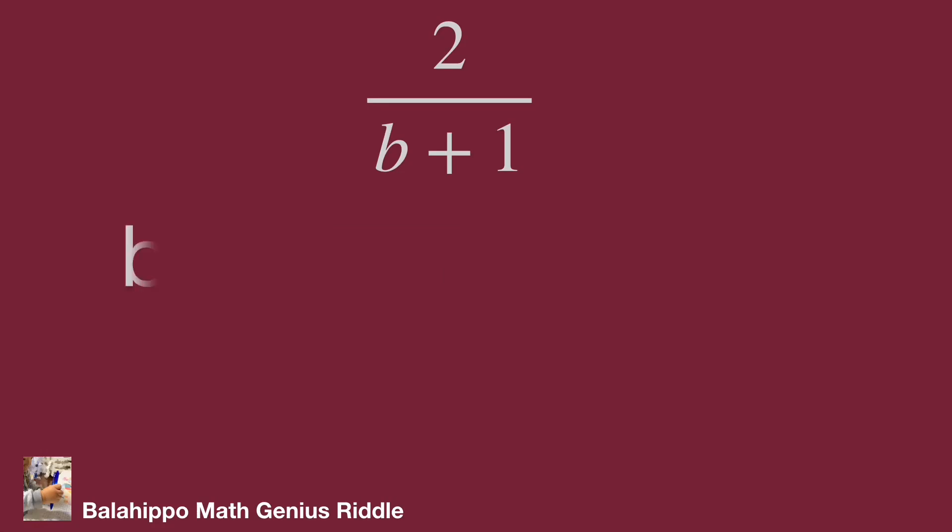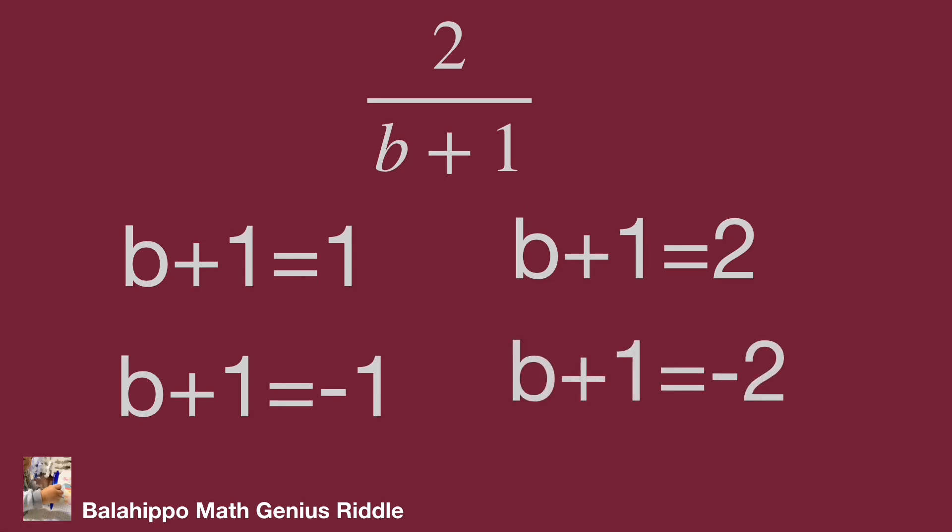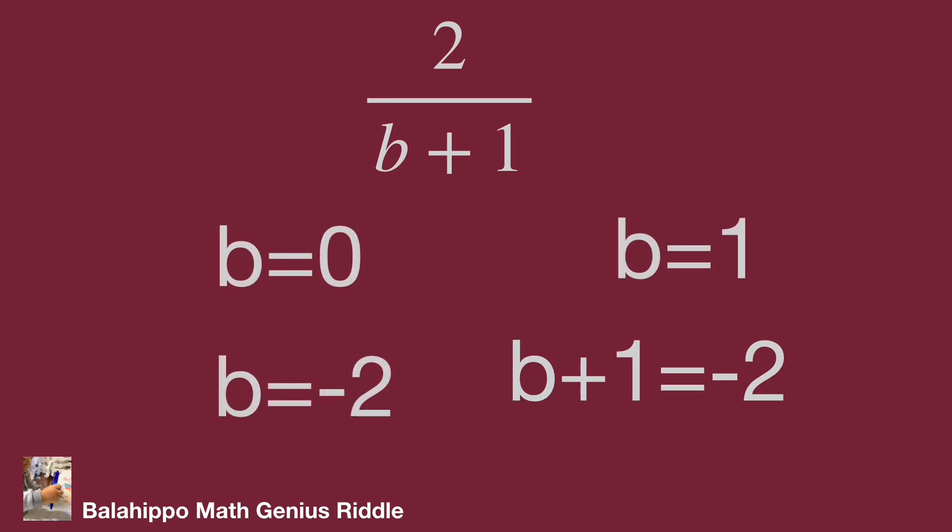So b plus 1 could equal 1, or b plus 1 equals 2, and the negative value group: b plus 1 equals minus 1 or minus 2. Then we get b equals 0, 1, minus 2, or minus 3.